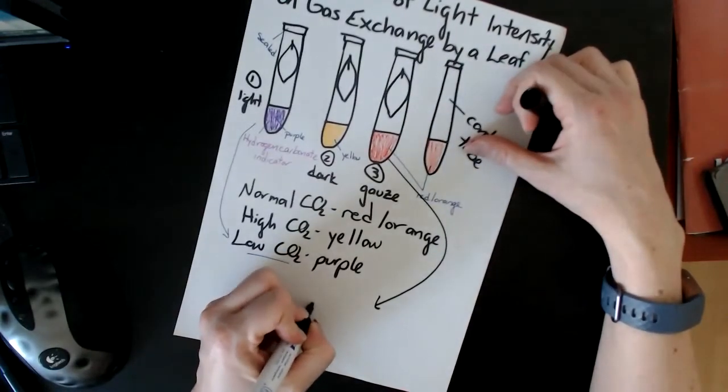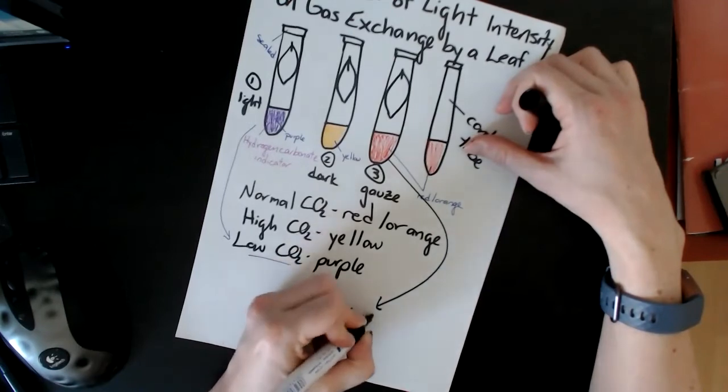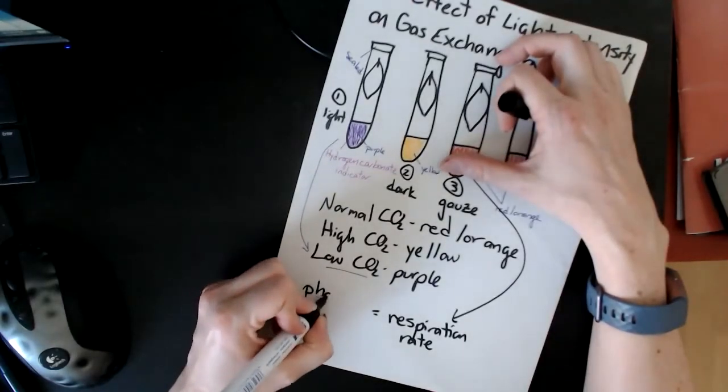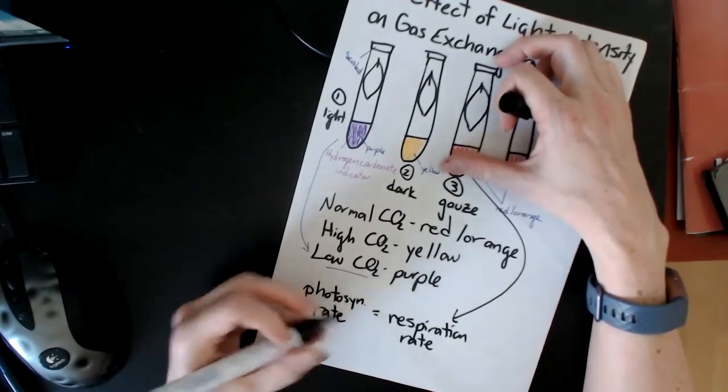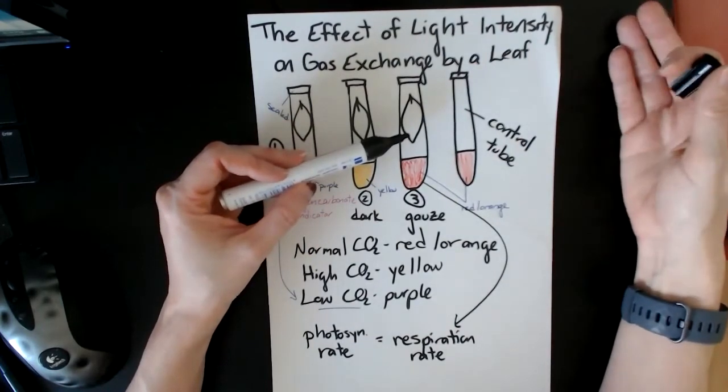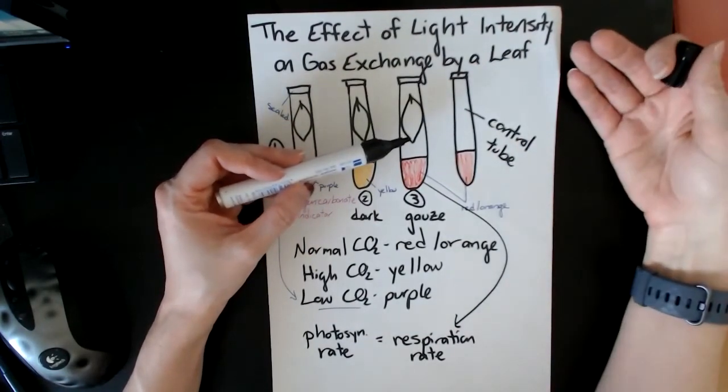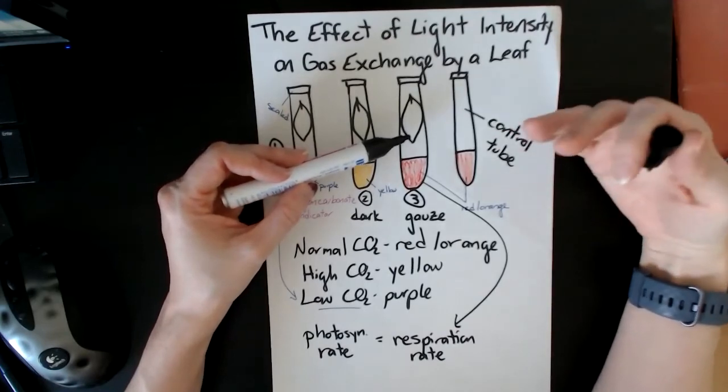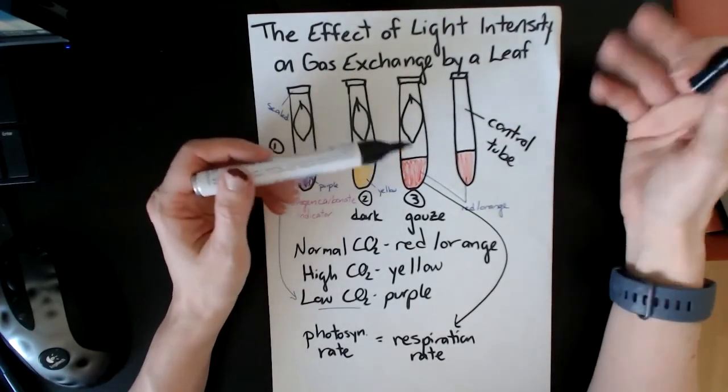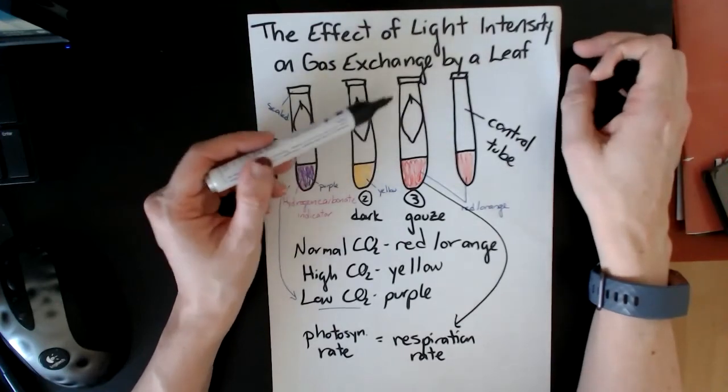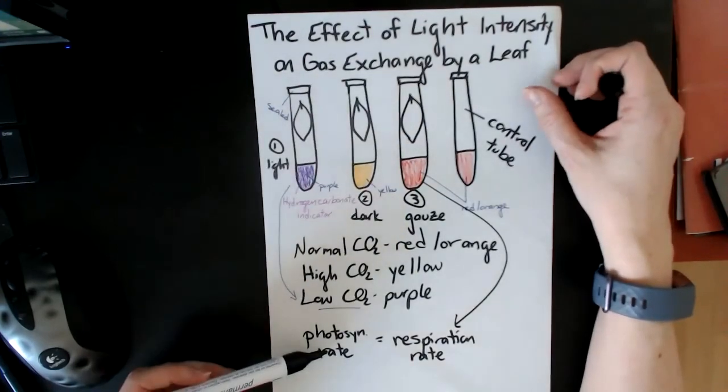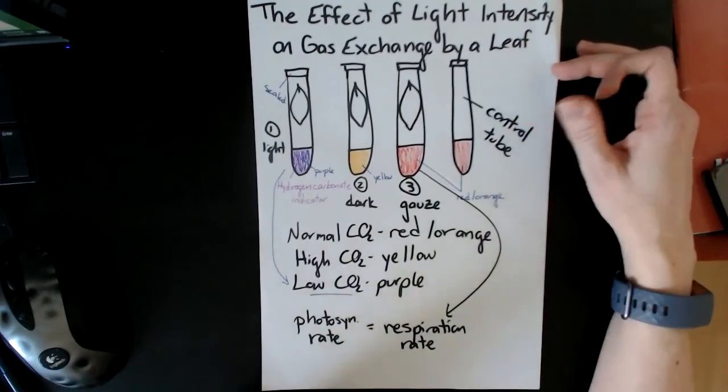Because the idea is that as the leaf is producing oxygen from photosynthesis, it's then using that amount of oxygen for respiration. Actually, let me talk about carbon dioxide. So the idea is that the carbon dioxide that is being produced from respiration is then being used immediately for photosynthesis. So overall, there is no net change in the amount of carbon dioxide in this tube because photosynthesis is happening at the same rate as the respiration.